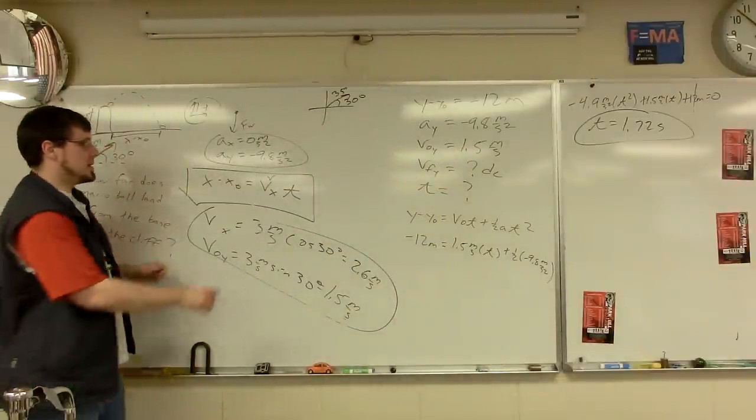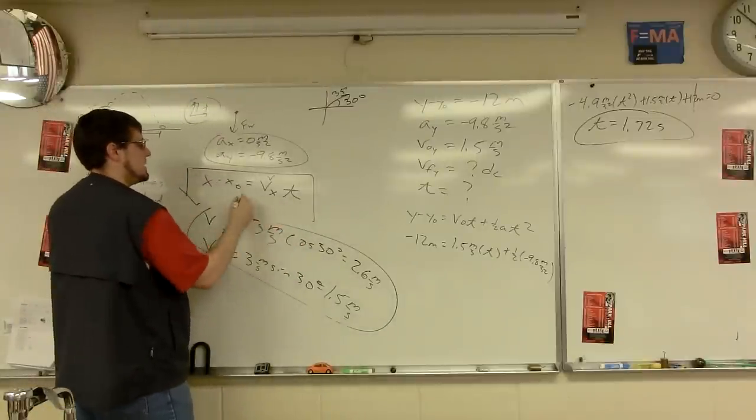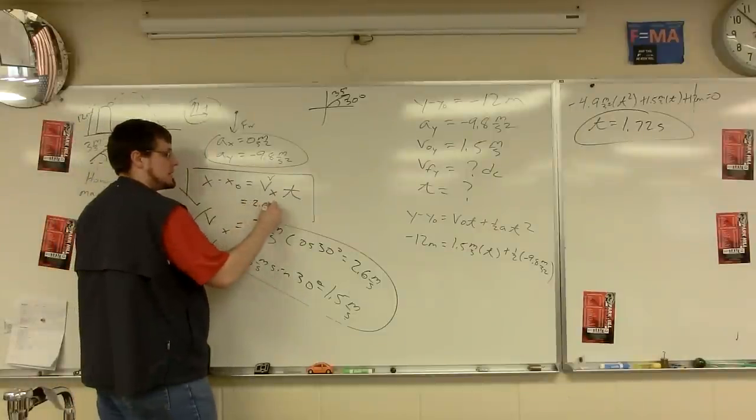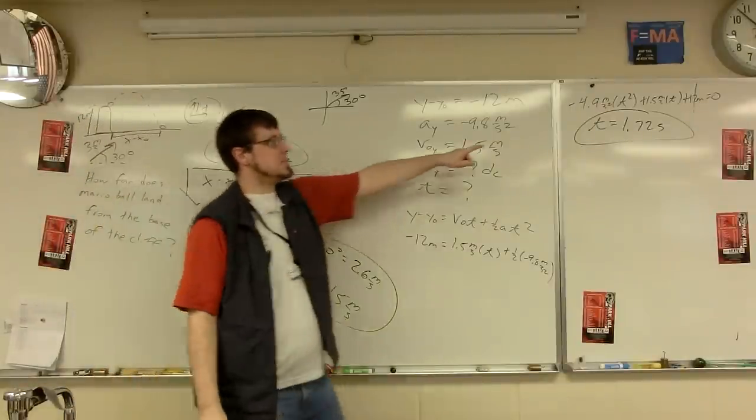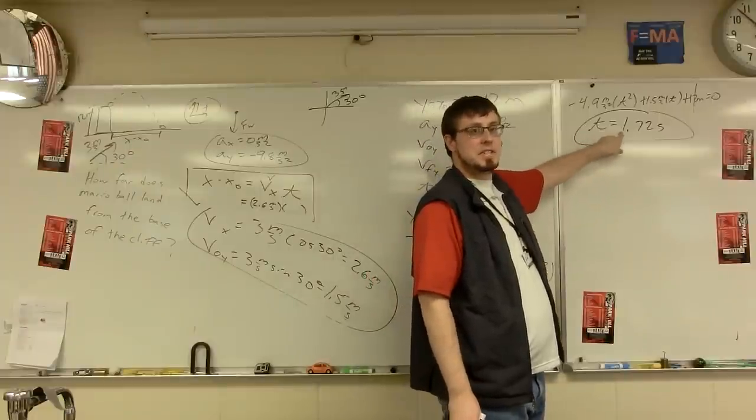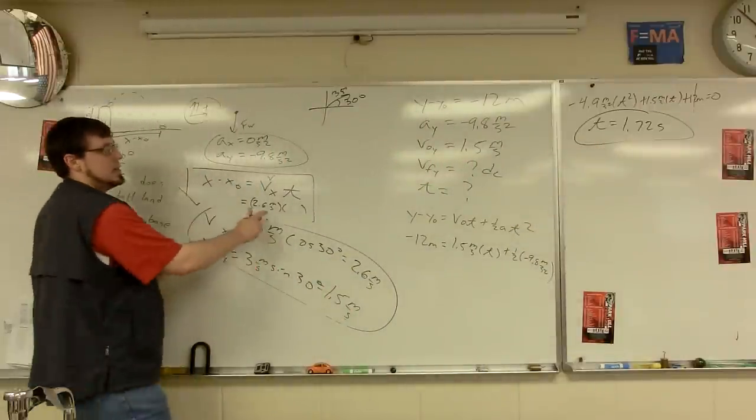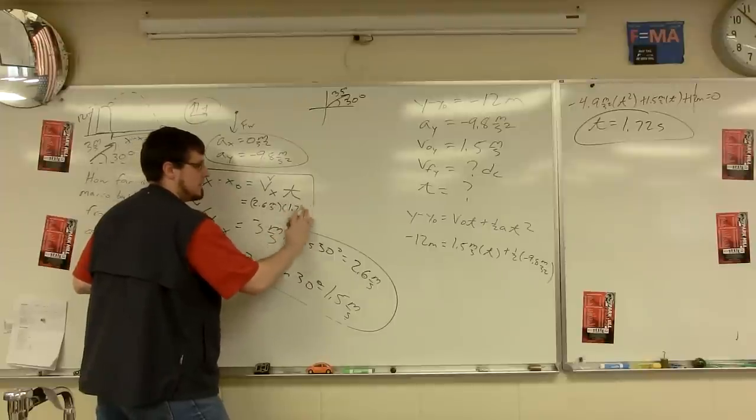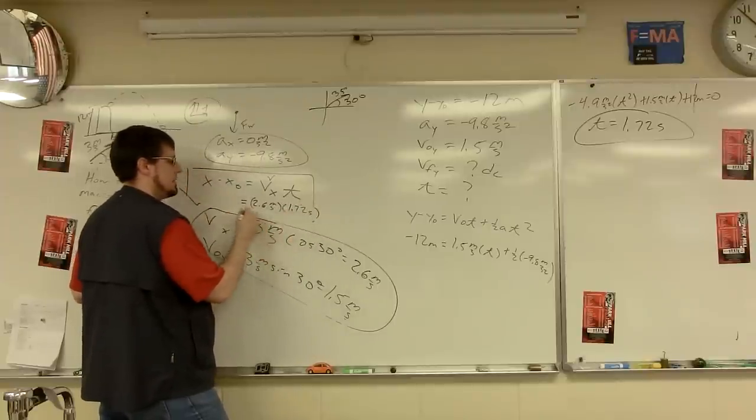Final step, we just plug and chug into here, our formula for the X. I think I can squeeze that in here. So we'll have how fast in the X, which has not changed. So it's still 2.6 meters per second. And our time. And this happens to also answer the question, how long it's in the air. This is our hang time, total time in the air. And that's the same for the X and the Y. So 2.6 meters per second times 1.72 seconds.